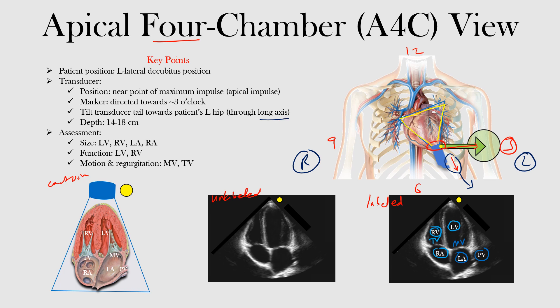This is the transducer here — it would be at the top, and this here is the marker, labeled in yellow. The marker is directed towards three o'clock. So what can we assess? We can assess the chamber size of the left ventricle, right ventricle, left atrium, and right atrium. We can assess left and right ventricular function, and we can see the motion and whether there's any evidence of regurgitation at the mitral valve or the tricuspid valve.